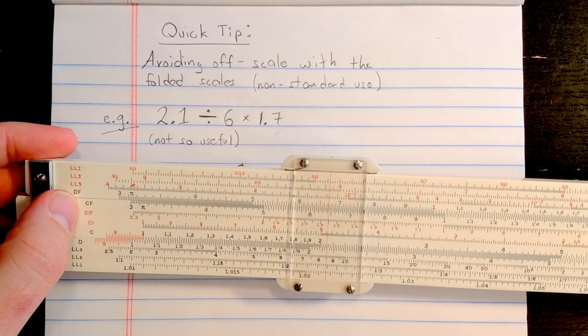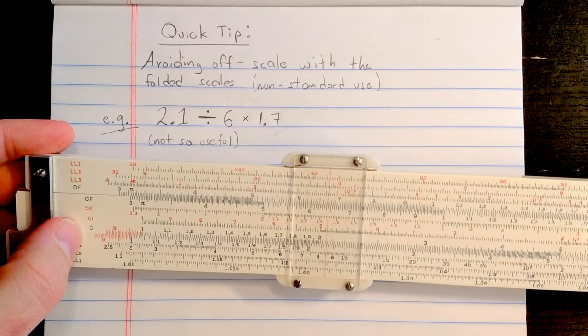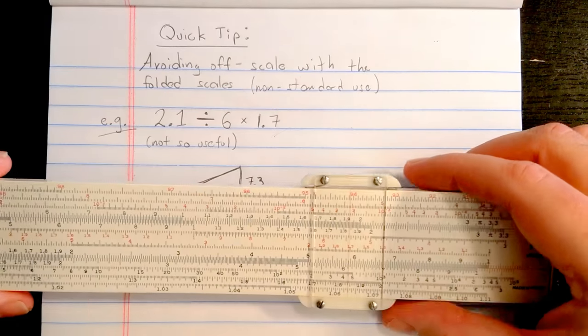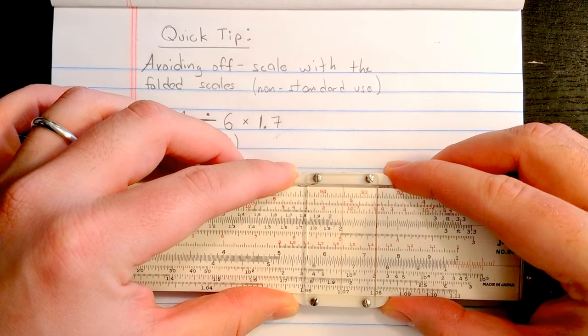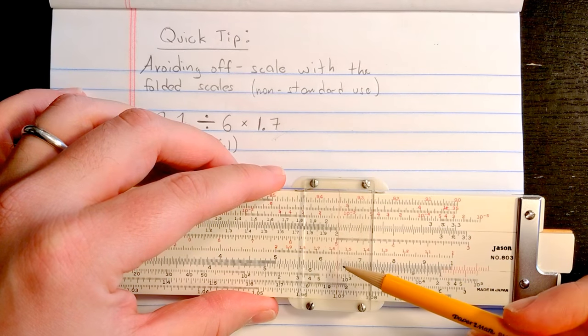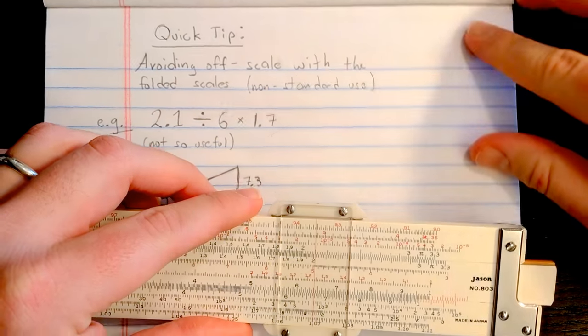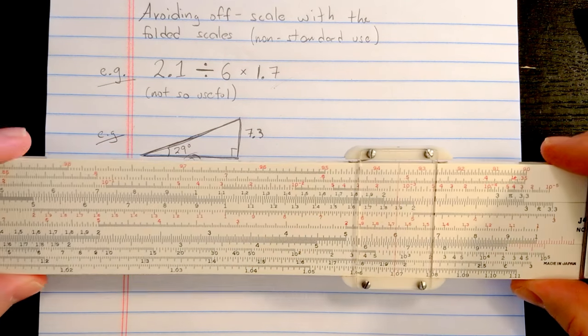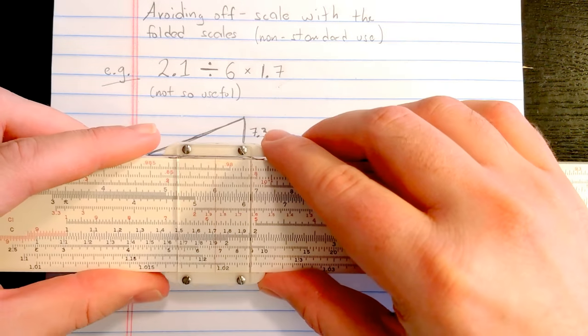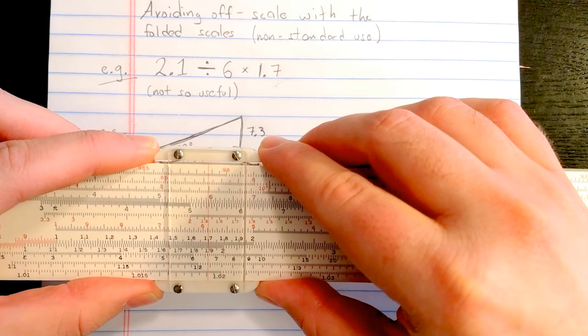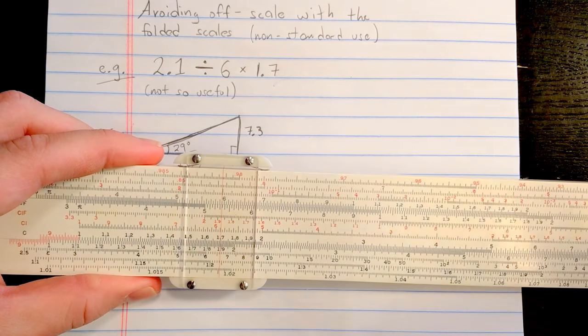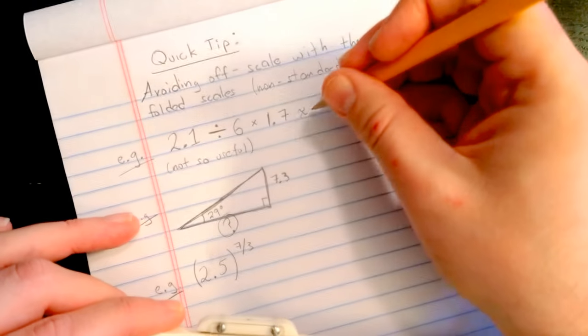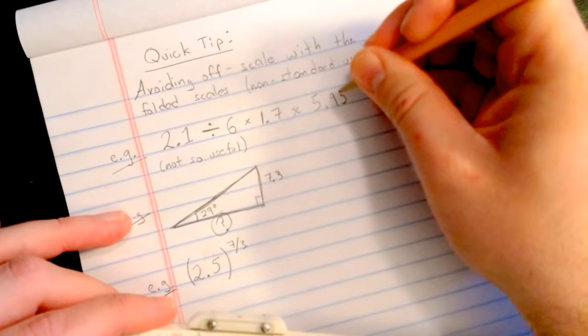So here what I'll do is I'll use the DF scale on the slide rule and the C scale. So I have the one folded scale and the one normal scale. I'll find the 2.1 on the DF scale, okay, here. Then remember I'm going to use the C scale, so I want to divide, so I'll find the 6. Then multiply by 1.7, I'll find 1.7 on the C scale. And I'll read the results up on the DF scale, right here, 5.95.